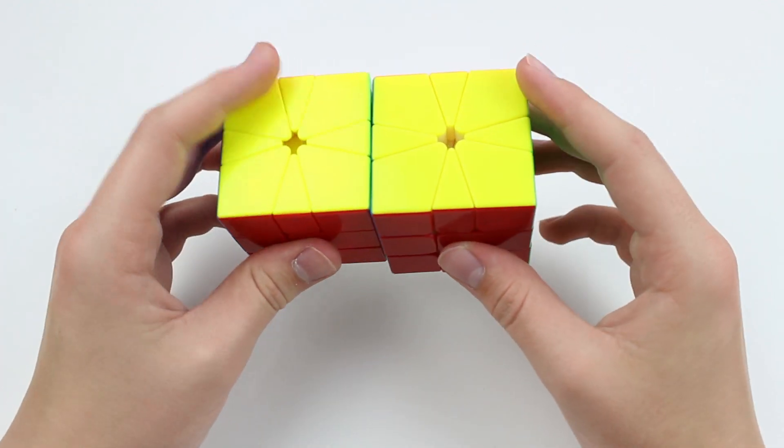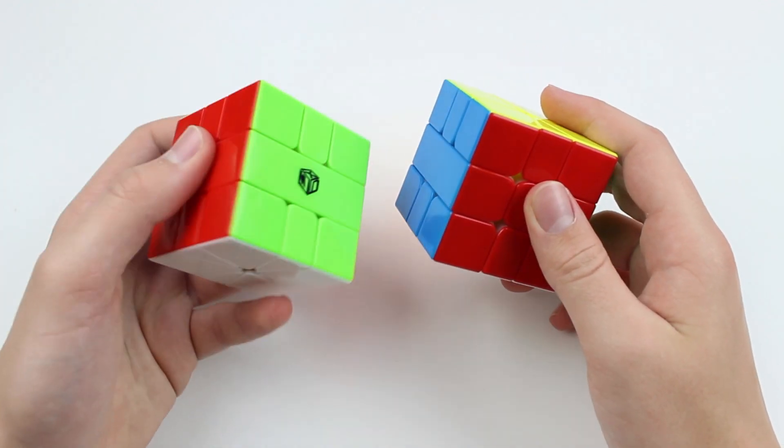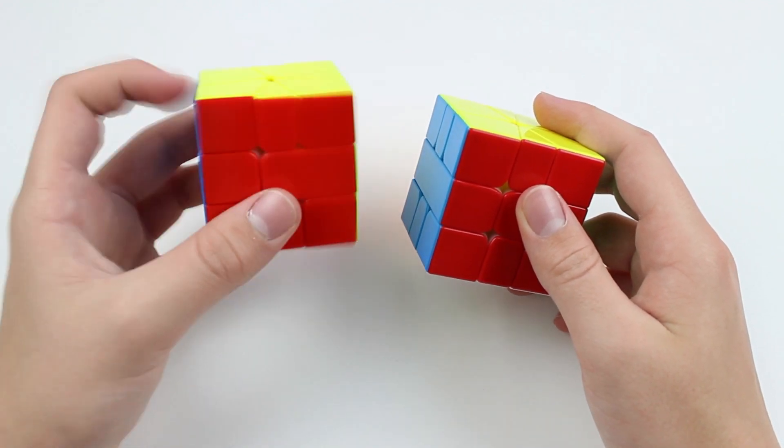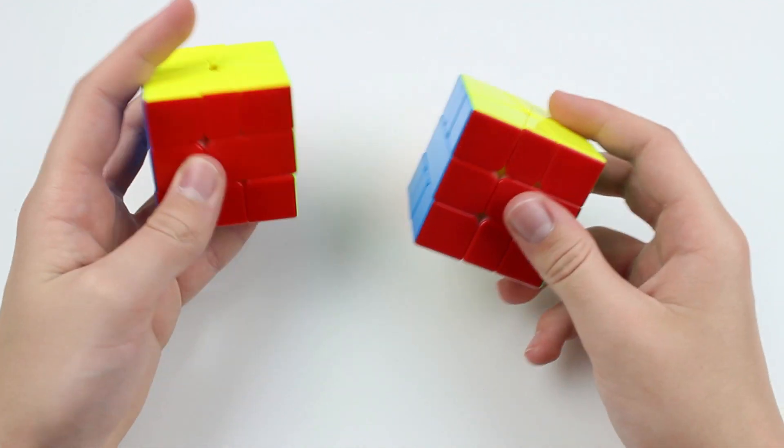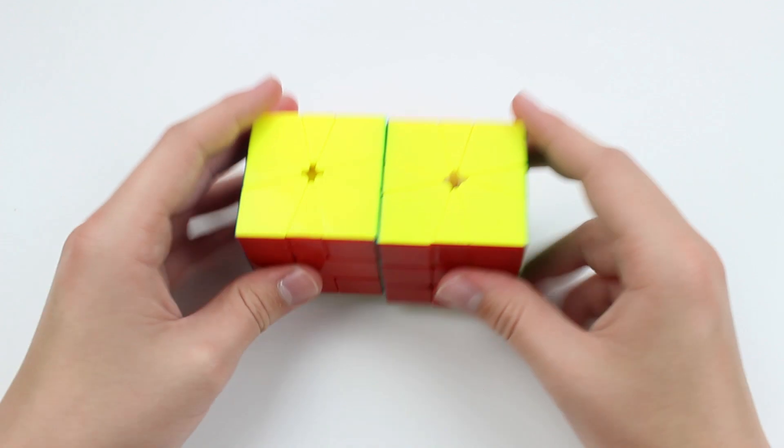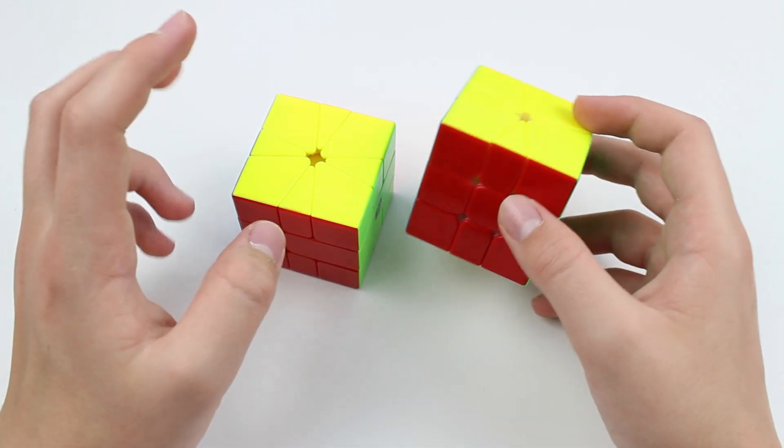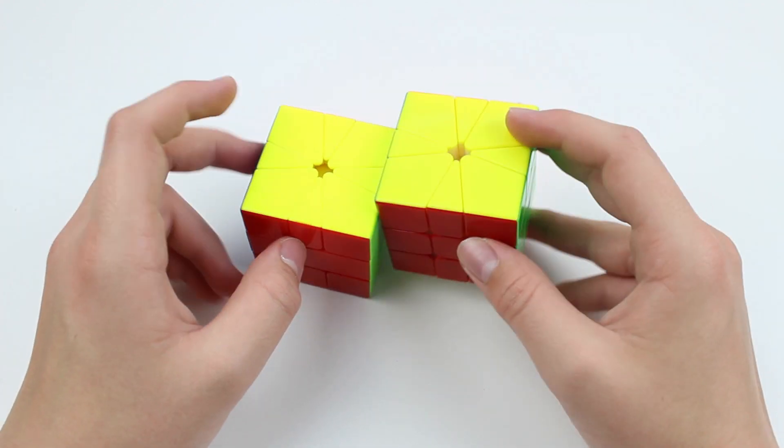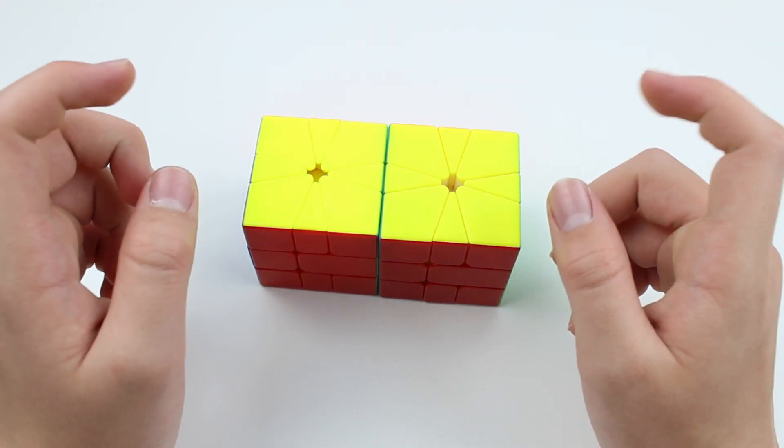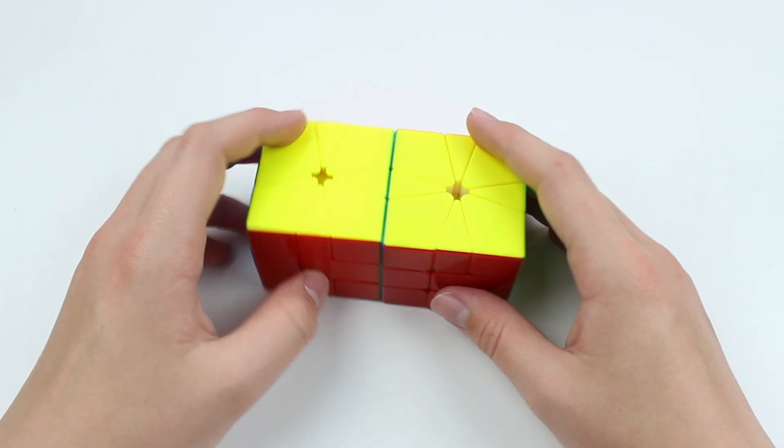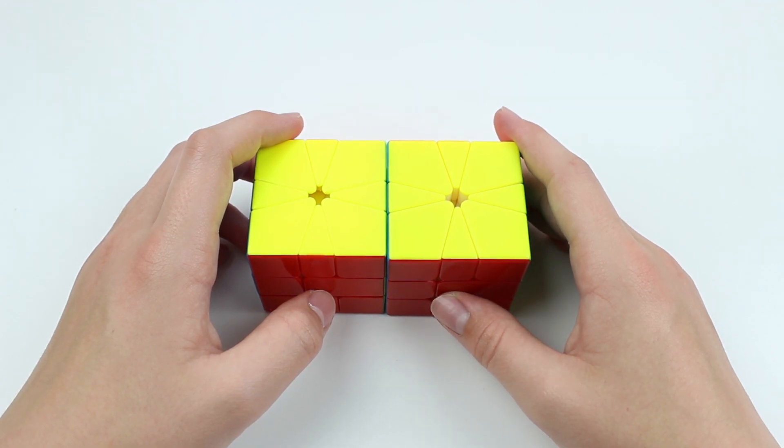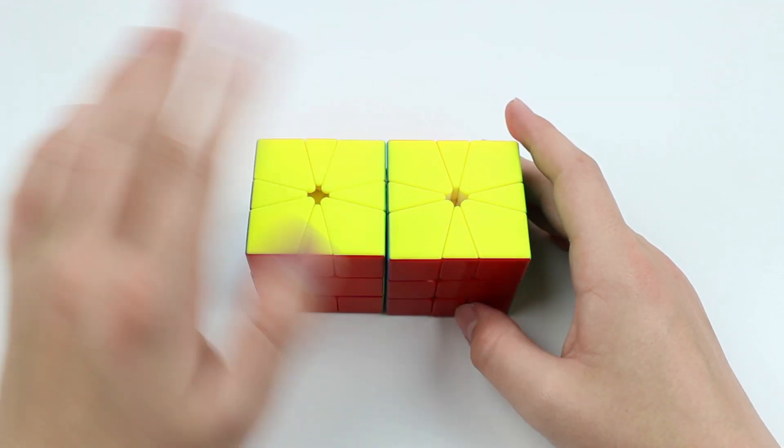Anyhow, I hope that you enjoyed this video. I'll leave links to both the Volt, the unmagnetized Volt—I magnetized this one myself—and the Little Magic M square one down in the description. By the way, the unmagnetized Little Magic square one is also available for purchase for only $7, so you can buy both these cubes on thecubicle.com, and I'll leave links to them down below. Hope you guys enjoyed the video, and I'll see you all in the next one. Bye!